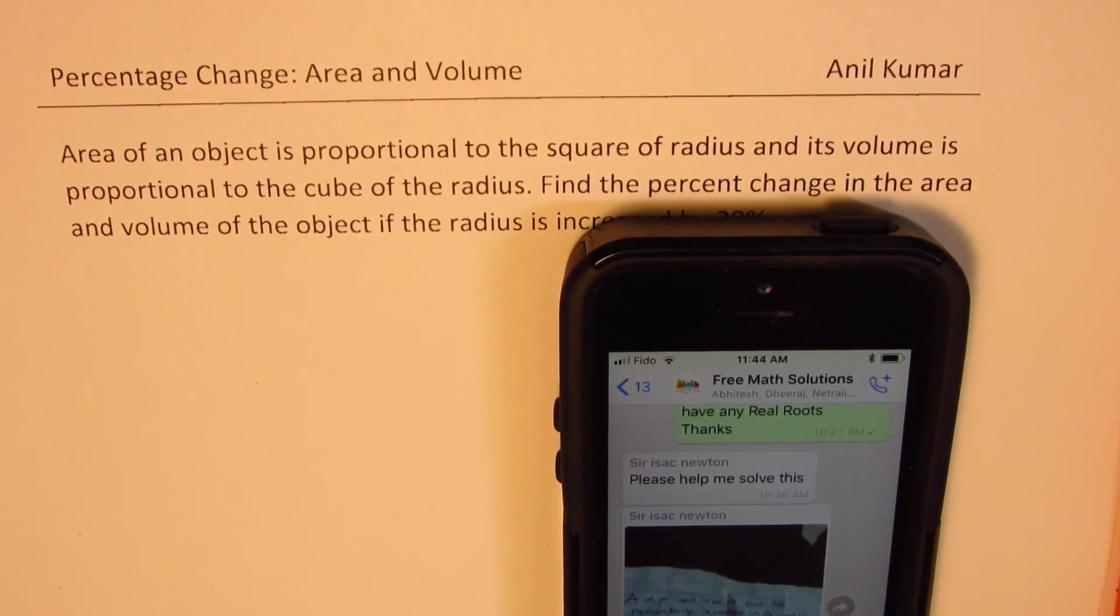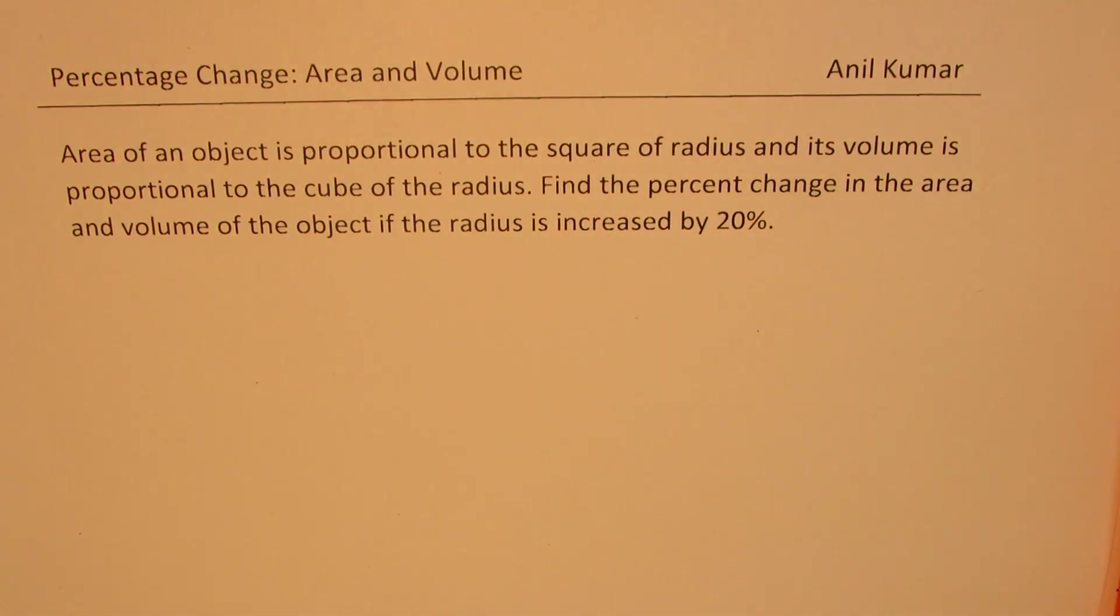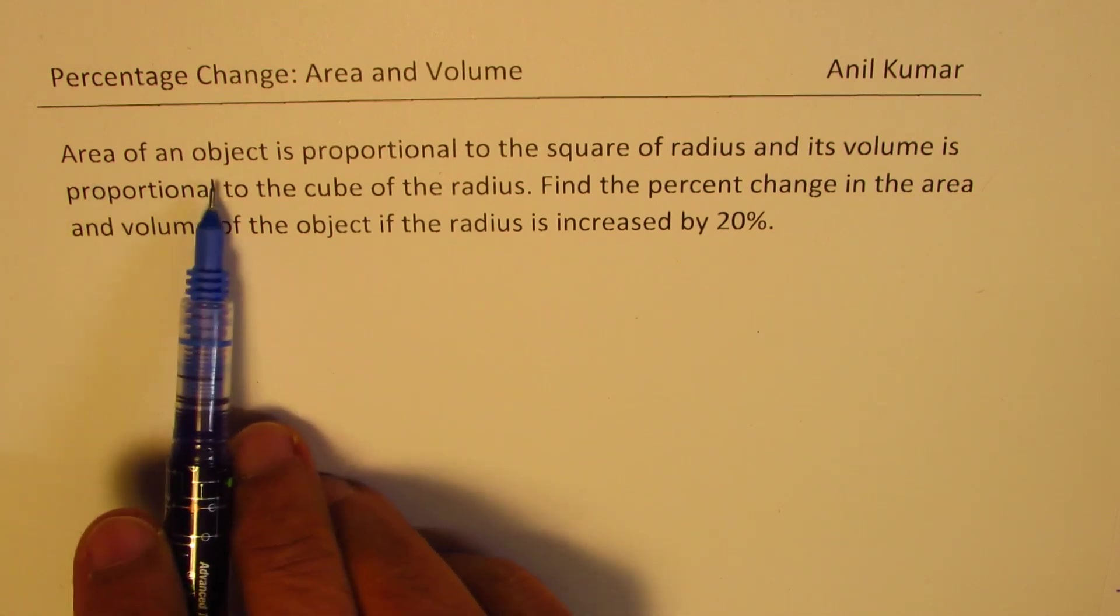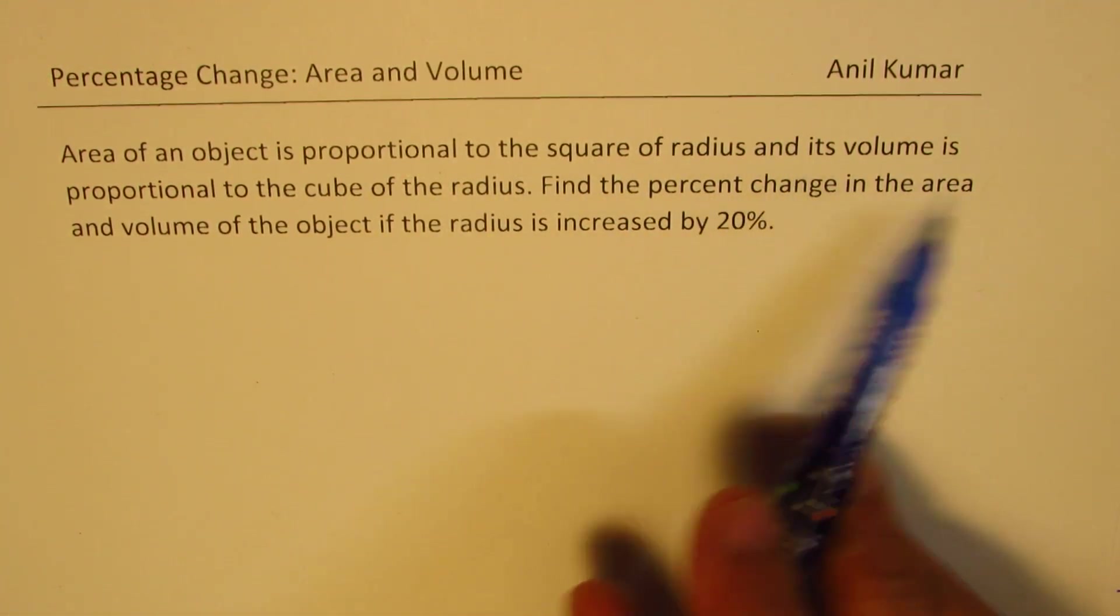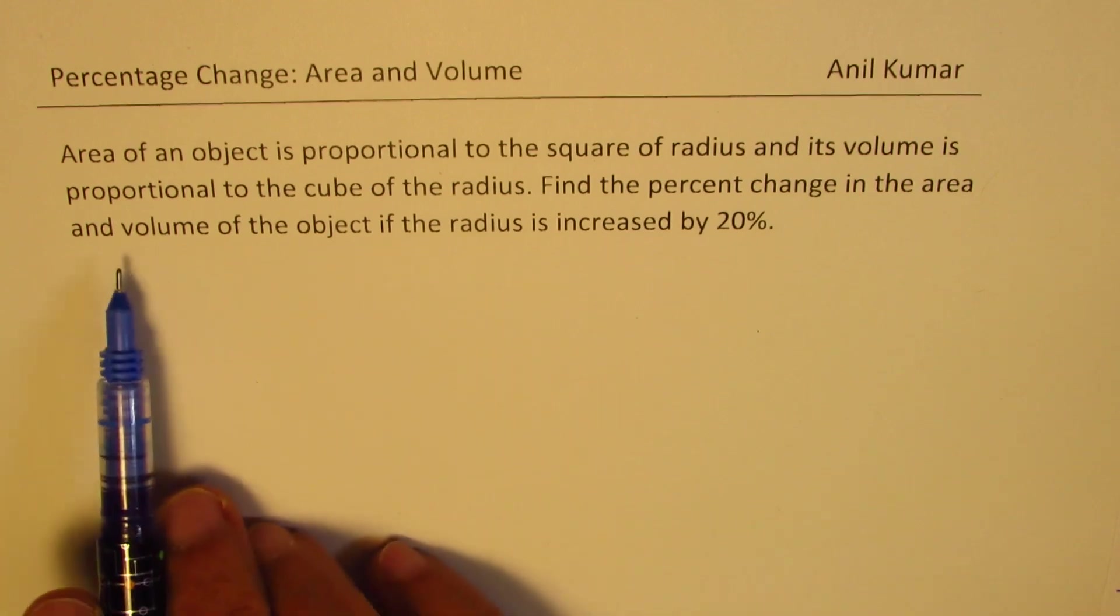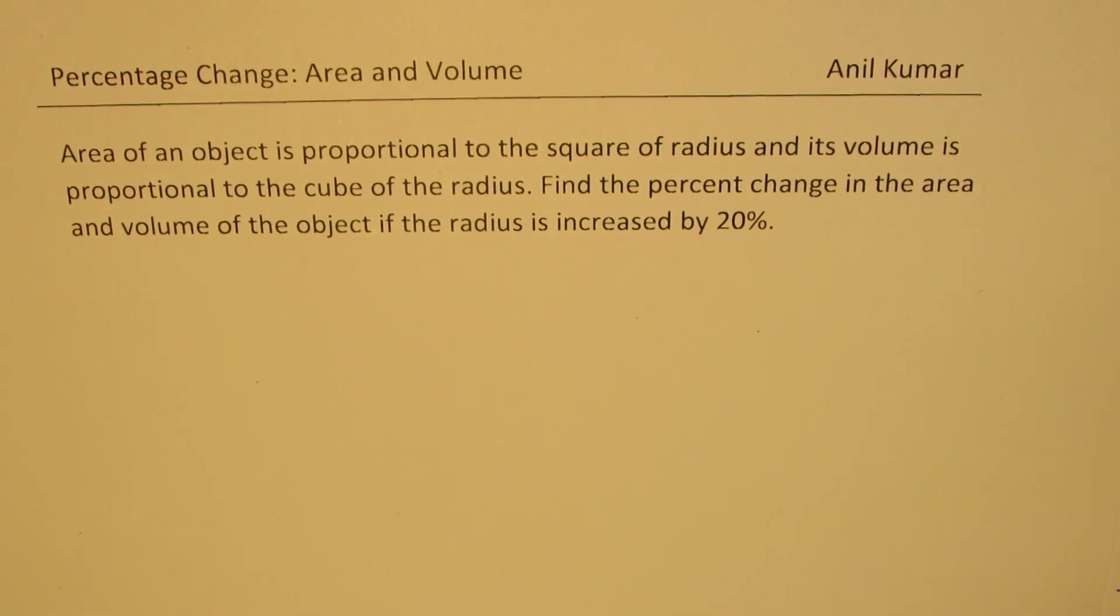Here is another very important question which I like to discuss. We have seen these types of questions at many different levels also in multiple choice competitive exams. This question relates percentage change in radius with percentage change in area and volume. Here is the question and let us see how to solve such examples. Question here is area of an object is proportional to the square of radius and its volume is proportional to the cube of radius. Find the percent change in the area and volume of the object if the radius is increased by 20%.